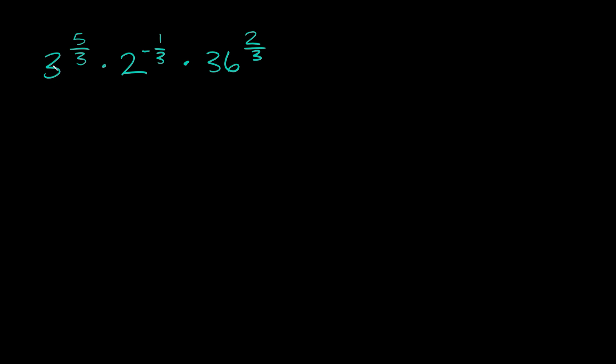So one thing we can do here is, well the first thing I'm going to do is turn this exponent positive just because it'll be a little easier to work with. So here we're going to have 3 raised to the 5 thirds times, and then in order to turn this exponent positive you have to just flip whatever number you have here, or in other words just find the reciprocal. So the reciprocal of 2 is 1 half. So then we can turn this to positive 1 third. And then here we still have times 36 raised to the 2 thirds.